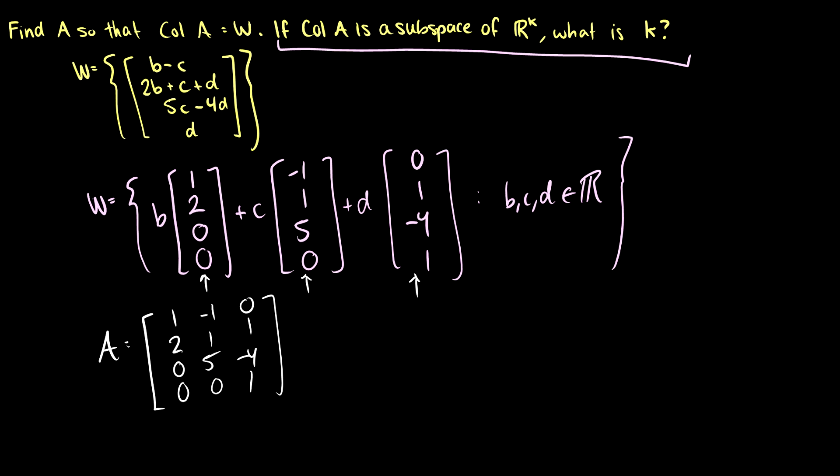So this matrix A, the span of A is going to equal the column space of A, which is equal to W in this case. So here's the question. If column space of A is a subspace of R^k, what is k?